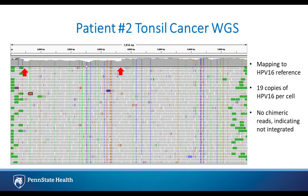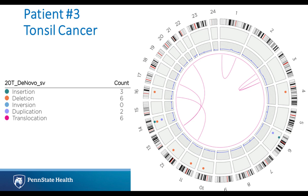This second patient has tonsil cancer, and for this one we have both tumor and lymph node isolated. Strikingly, there are essentially no structural variants detected by BioNano. Going to the whole genome sequencing, this one maps to the HPV16 reference. We note 19 copies of the virus per cell, but there are no chimeric reads, indicating the virus is not integrated. There are some areas of decreased mapping to the HPV reference but no chimeric reads, so it's not integrated — we therefore think this is more likely to be an episomal form.